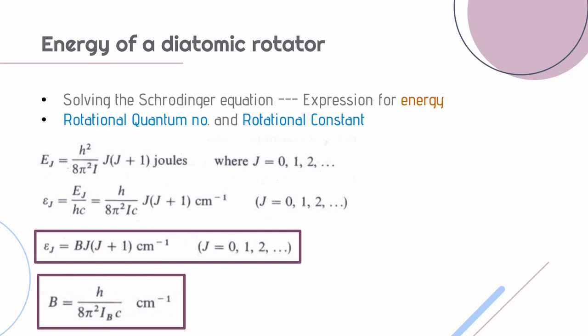Since the molecule is rotating it has rotational kinetic energy and we obtain the rotational kinetic energy expression by solving the Schrödinger equation. In the rotational kinetic energy expression we have two new terms: rotational quantum number and rotational constant. It is given by B times J into J plus 1 and it is expressed in wave numbers, centimeter inverse.